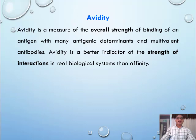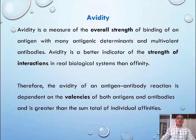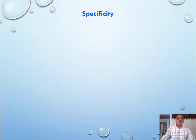Avidity is a measure of the overall strength of binding of an antigen with many antigenic determinants and multivalent antibodies. Avidity is a better indicator of the strength of interactions in real biological systems than affinity. Therefore, the avidity of an antigen-antibody reaction is dependent on the valences of both antigen and antibodies and is greater than the sum total of individual affinities.